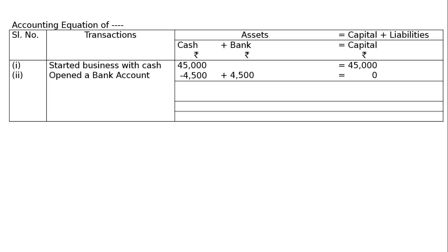When there are two transactions, you have to add them to find out the new equation. The new cumulative balances are: cash rupees 40,500, bank rupees 4,500, and capital rupees 45,000.